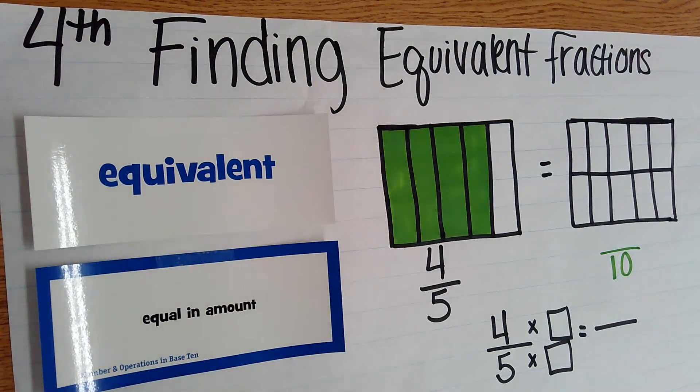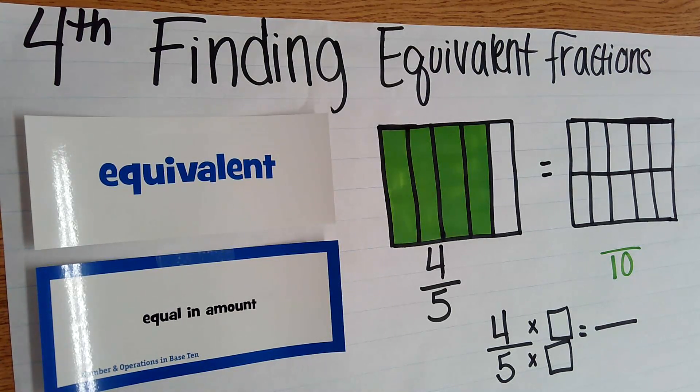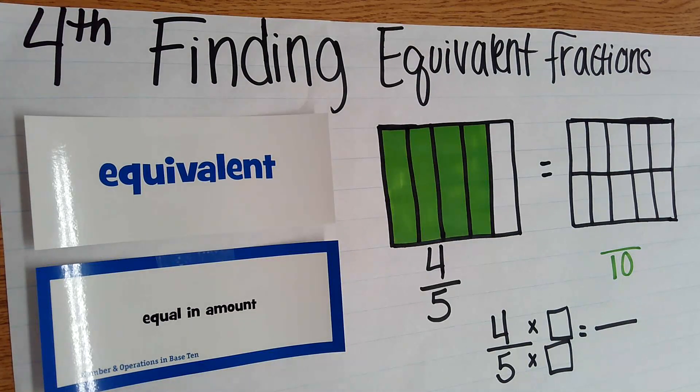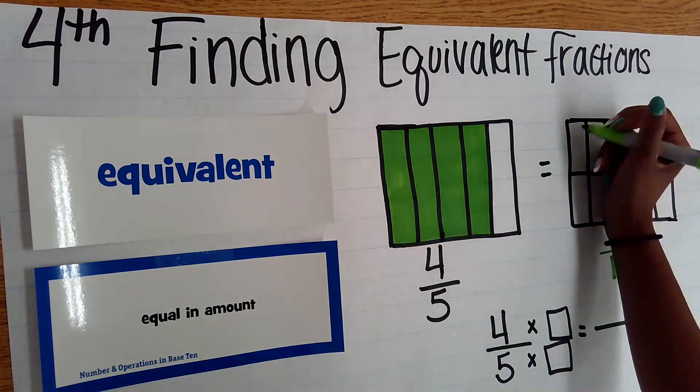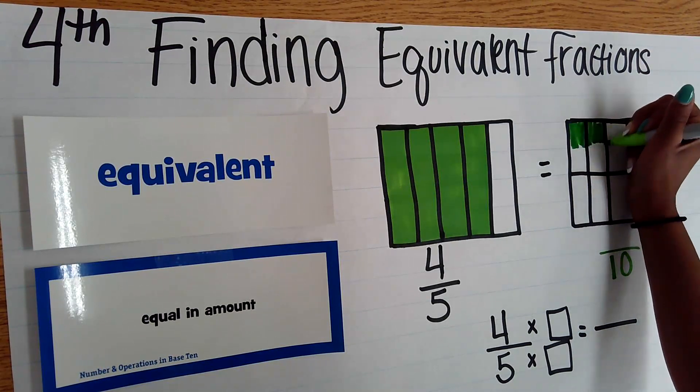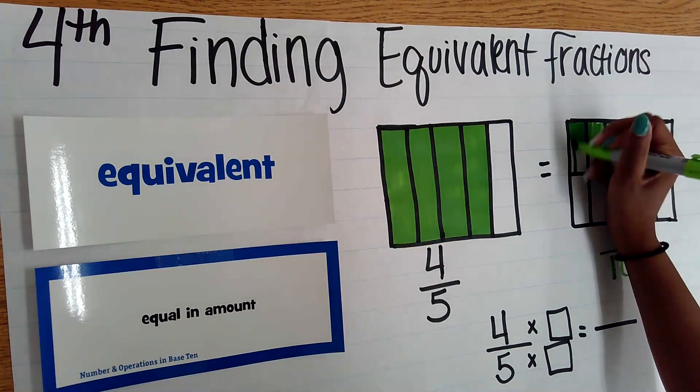Now, I need to shade in the same amount of space that is shaded in in my four fifths. Students are very familiar with this, as this is the skill they work on in third grade. So I need to make sure I match up my shaded space so it is an equal amount or equivalent.